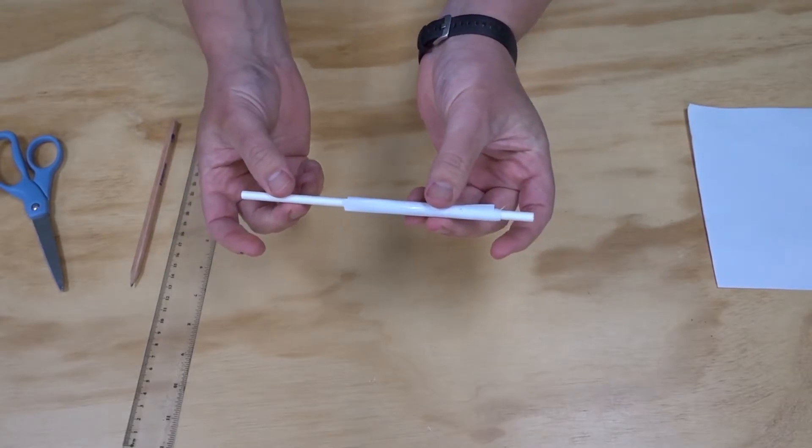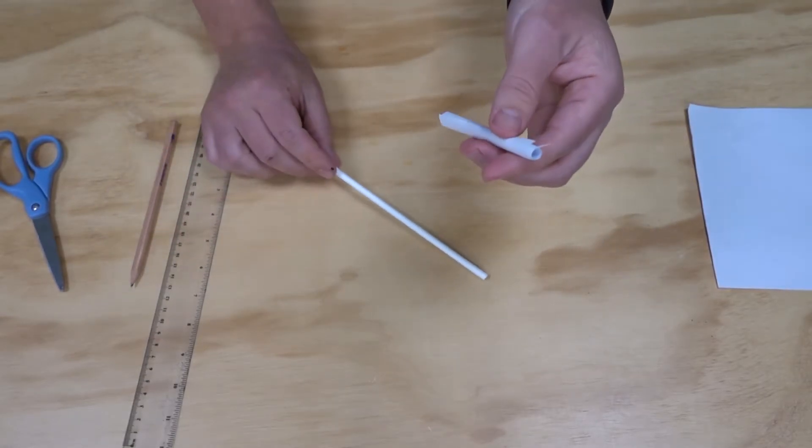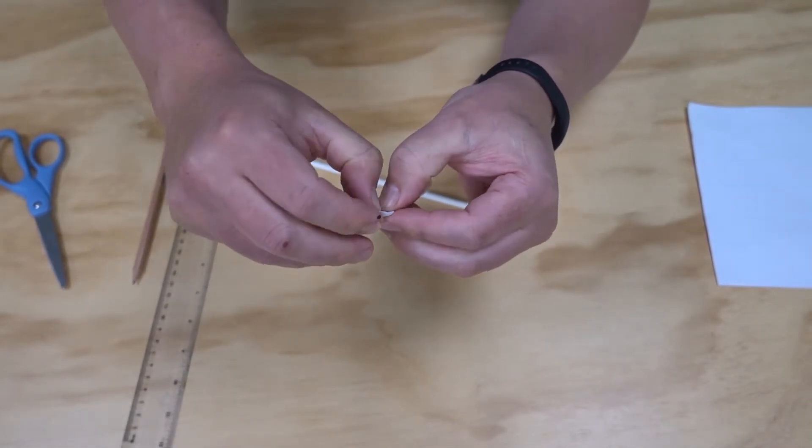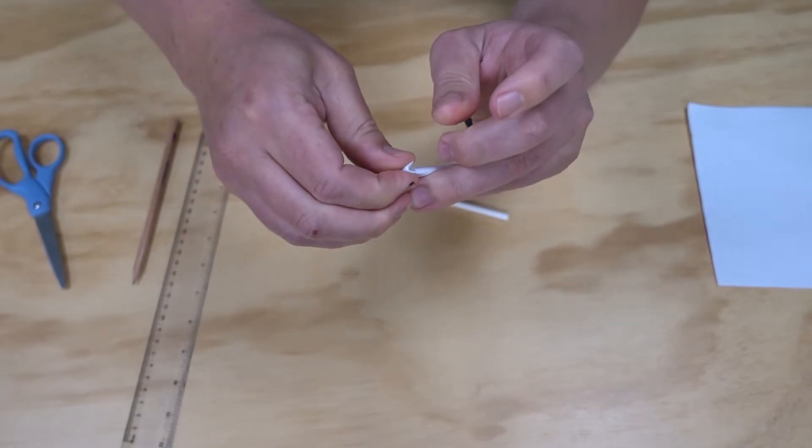You want the paper to be able to slide off the straw fairly easily. The next step is to seal this end. I'm just going to fold it over and stick it down with a little piece of tape.